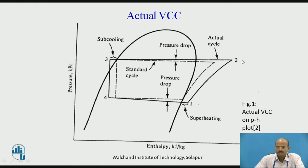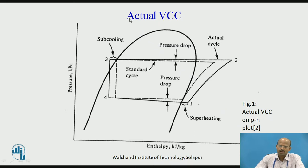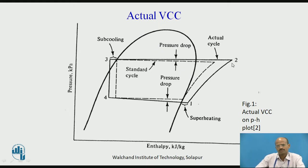So superheated vapor will enter into the compressor, which will get compressed actually. Here, 1 to 2 is the actual compression process, while for theoretical VCC the compression was isentropic. For actual VCC, it is an actual compression process, and depending upon the specific heat, there will be a corresponding value of the compression index. Point 0.2 represents the actual compression process, so at 0.2 a more superheated vapor refrigerant is leaving the compressor. For theoretical VCC, the exit refrigerant temperature was at a lower point, so there is more superheating caused due to practical considerations.